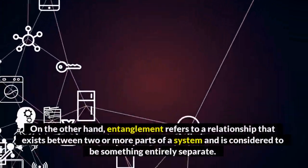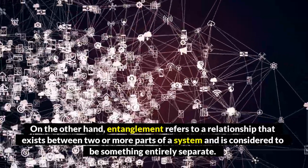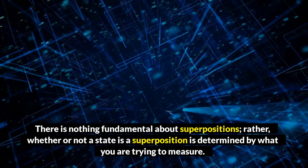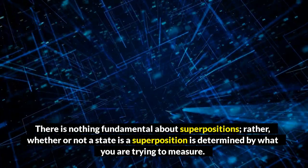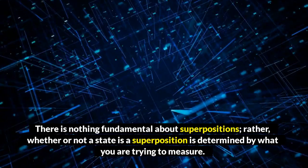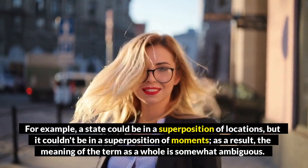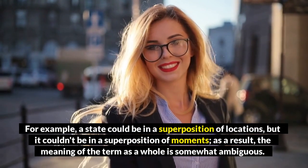On the other hand, entanglement refers to a relationship that exists between two or more parts of a system and is considered to be something entirely separate. There is nothing fundamental about superpositions. Rather, whether or not a state is a superposition is determined by what you are trying to measure. For example, a state could be in a superposition of locations, but it couldn't be in a superposition of moments. As a result, the meaning of the term as a whole is somewhat ambiguous.